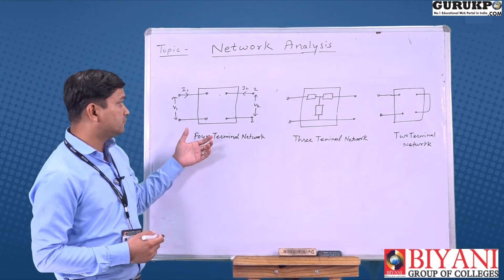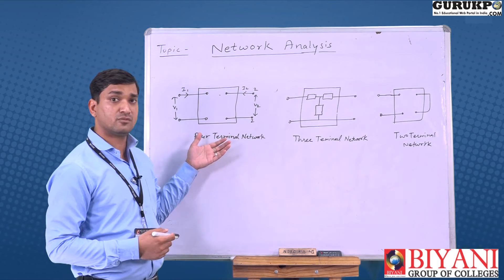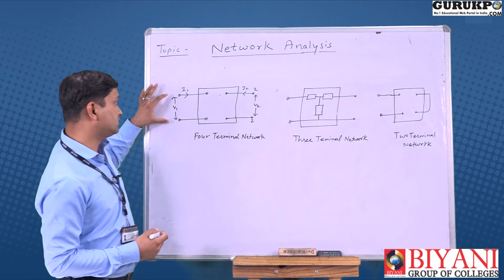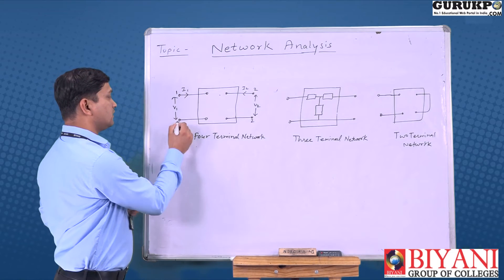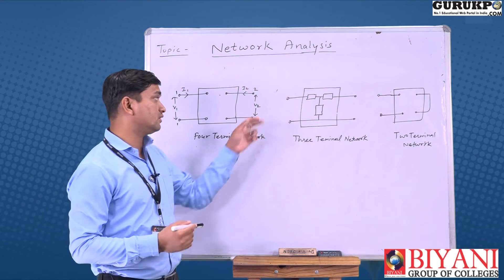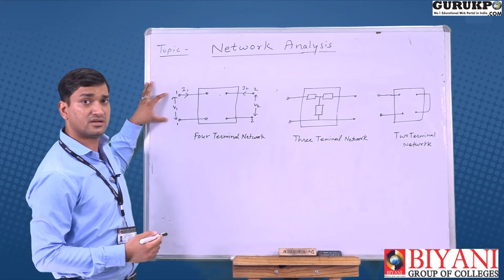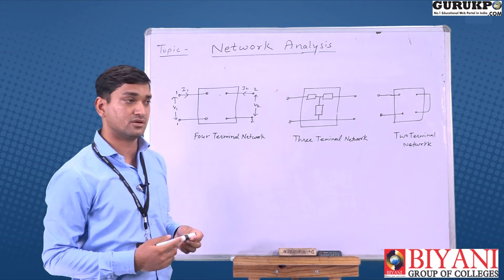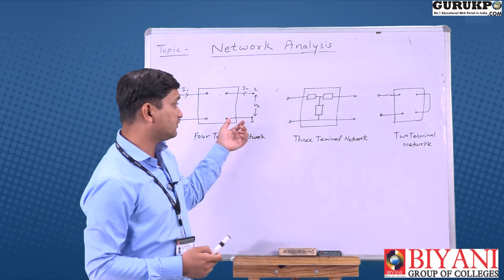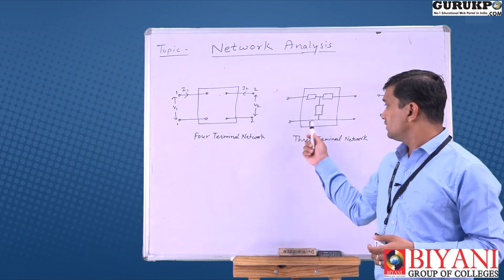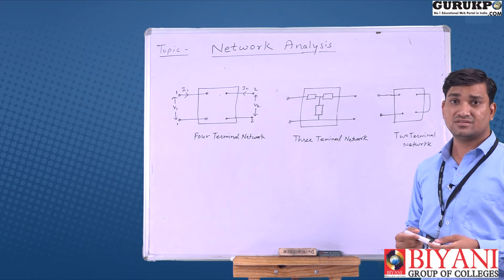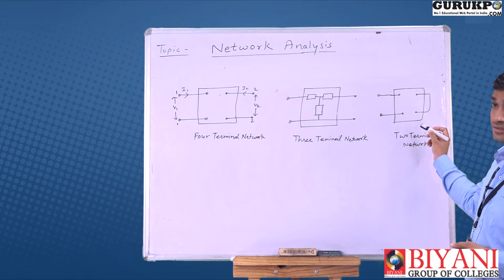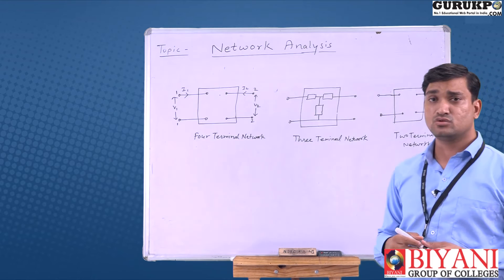Here we show the diagram of different types of networks. In the first diagram we can see that there are two input terminals 1-1 and two output terminals 2-2. This is known as a four terminal network. If we short circuit one terminal, this form is the three terminal network, and if two terminals are combined, it is known as the two terminal network.